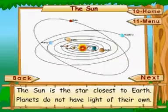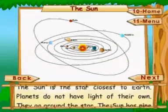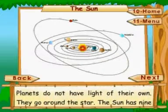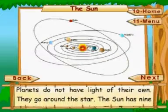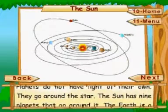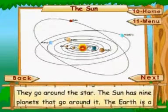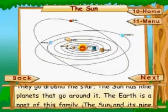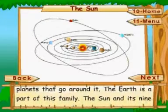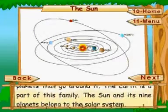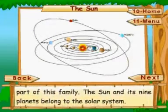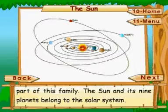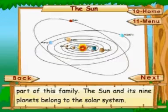Planets do not have light of their own; they go around a star. The Sun has nine planets that go around it, and the earth is part of this family. The Sun and its nine planets belong to the solar system.